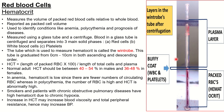To measure hematocrit, we first centrifuge our blood sample, then place it in a specialized tube — called a Wintrobe tube — which has graduations from 0 to 10 centimeters. This Wintrobe tube separates our blood into three layers: the hematocrit layer, the buffy coat, and the plasma layer.